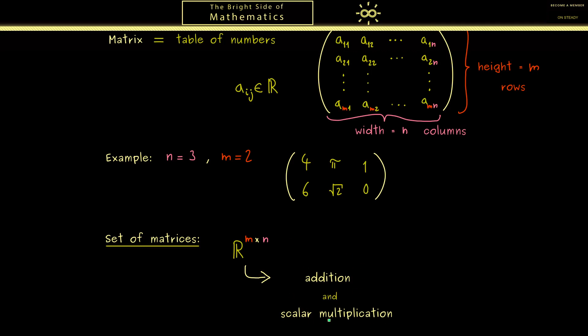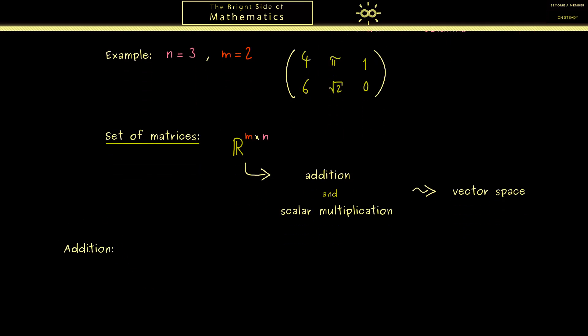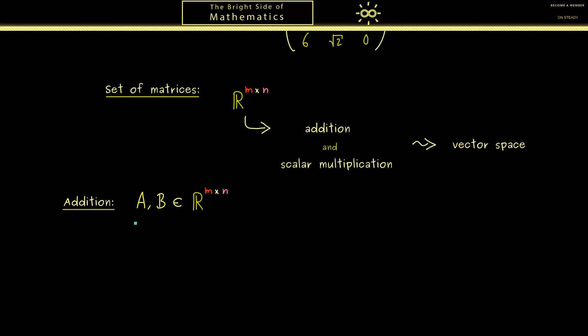And maybe it does not surprise you: the two operations we will define now are the addition and the scalar multiplication. That is what we usually do in linear algebra, because both things together give us a vector space. In other words, in the end we want to calculate with matrices in the same way as we have calculated with vectors. Therefore let's immediately start with the definition for the addition of matrices. This might not be a surprise: two matrices of the same shape we can easily add. So maybe let's call the two matrices A and B. In other words, we add the two tables of numbers here.